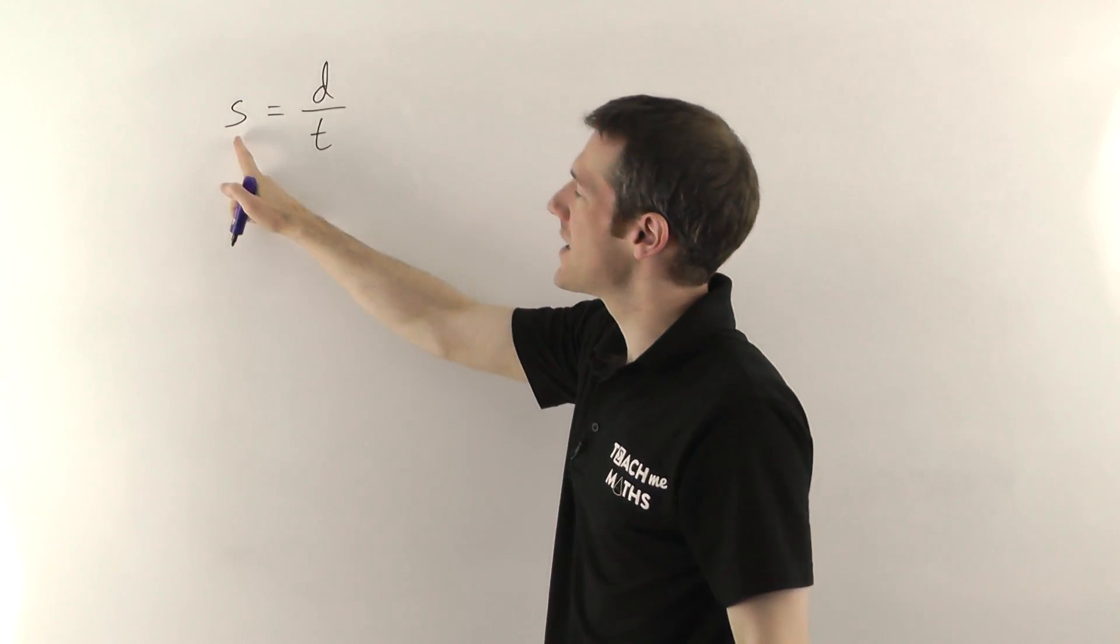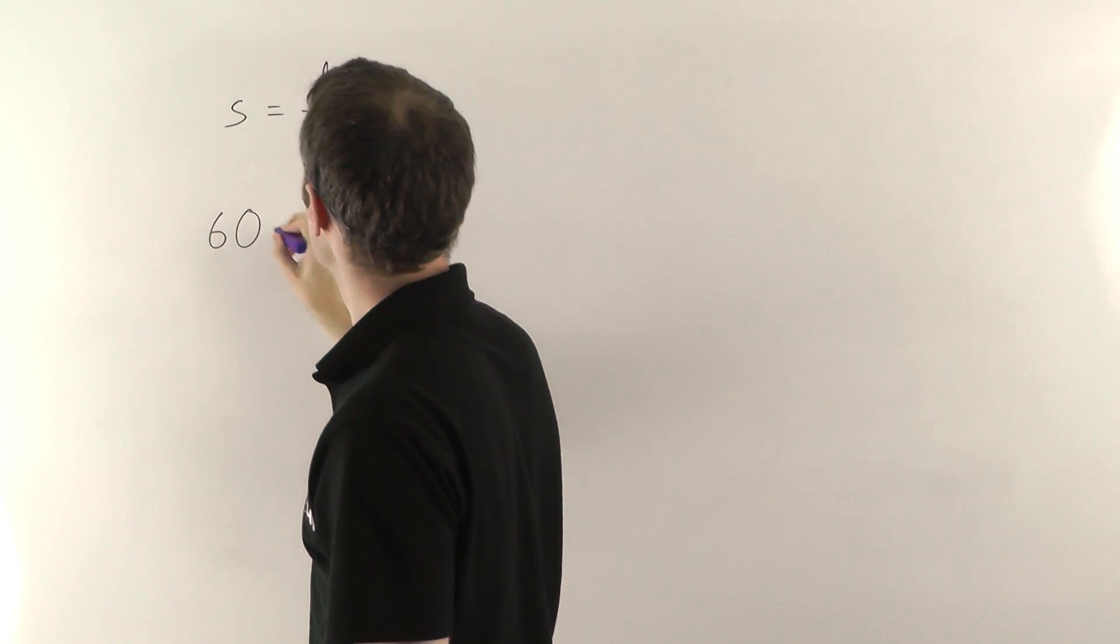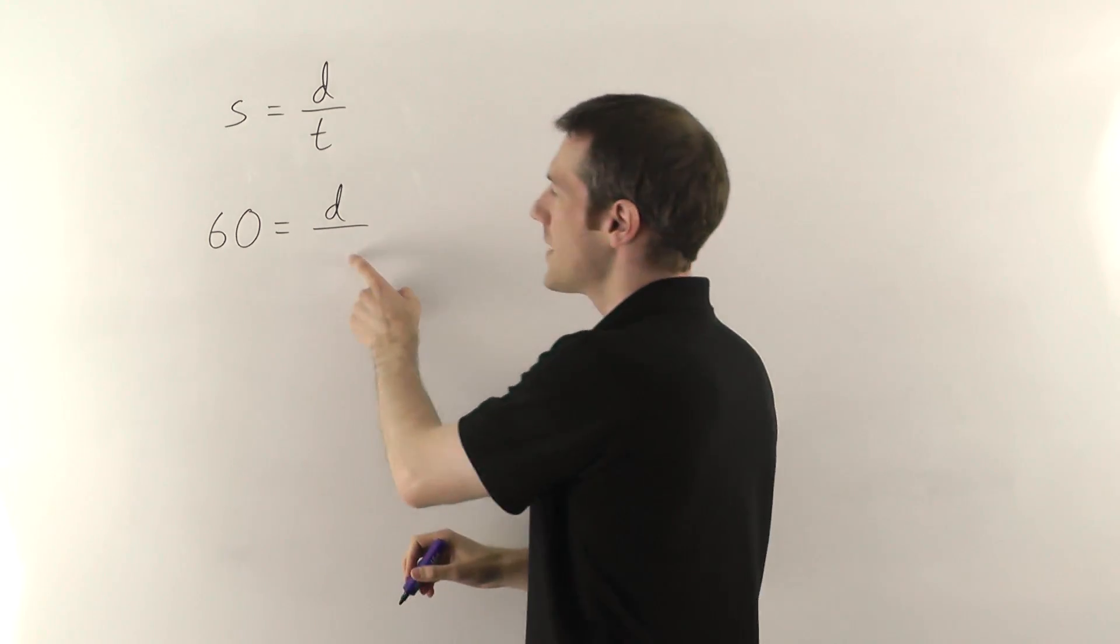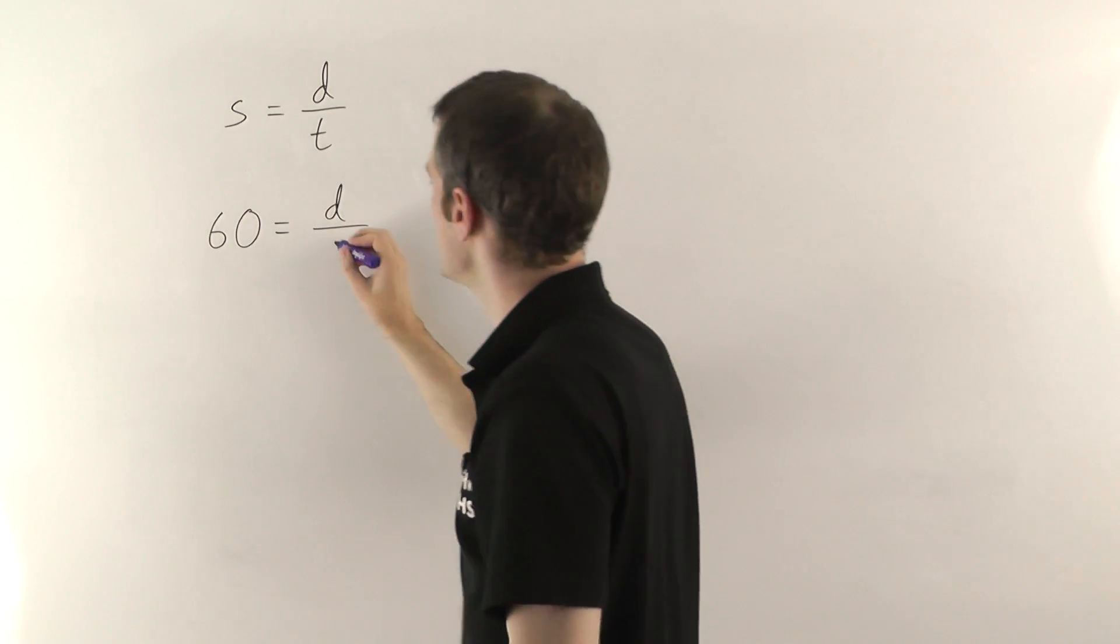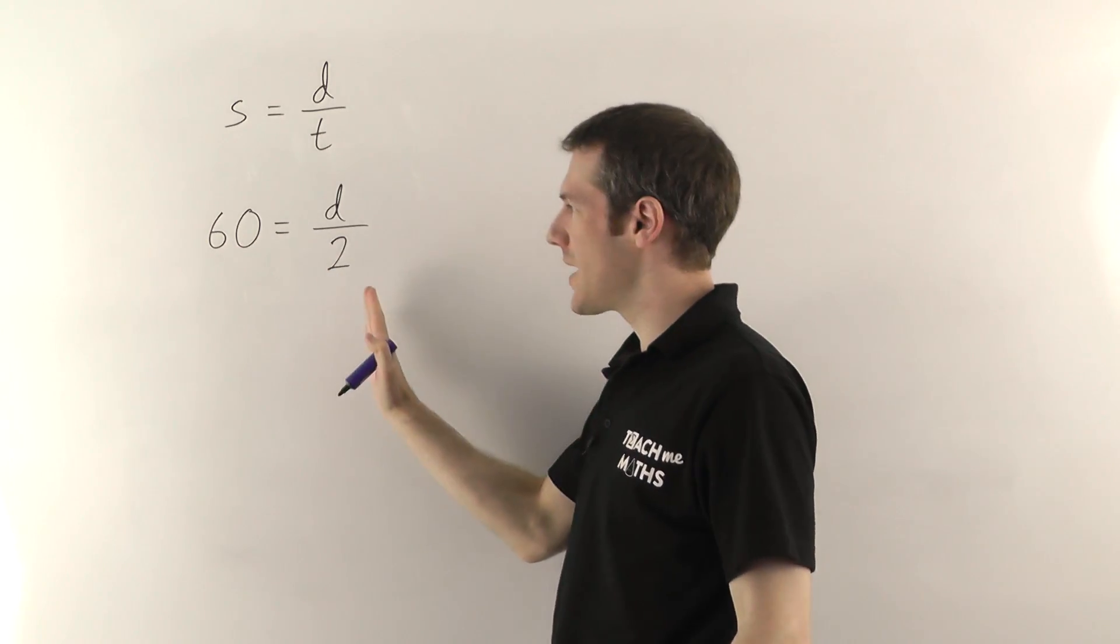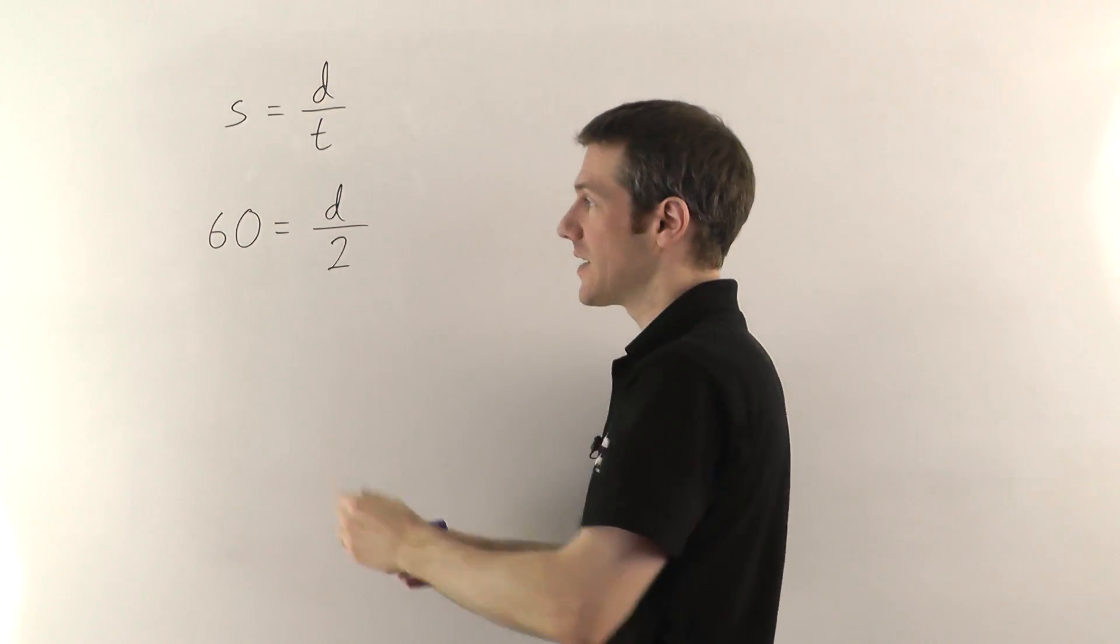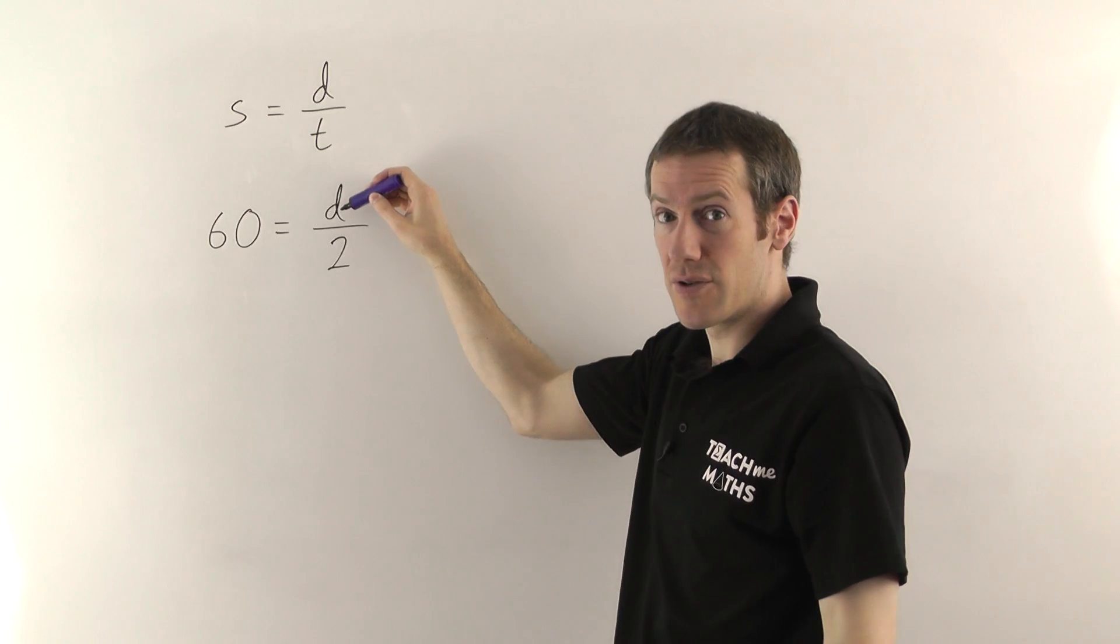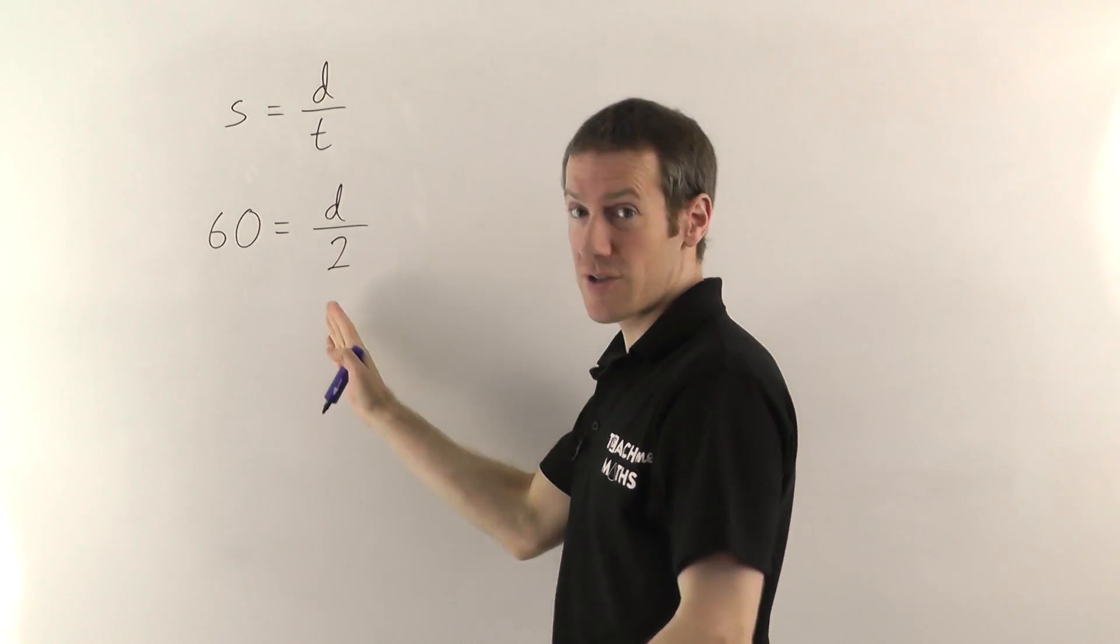Well we can do it using this equation. So as an example let's say we were traveling at 60 miles per hour, we don't know what the distance is, that's what we're trying to find out, and the time, imagine we were traveling for two hours and we want to know how far have we traveled? We've been going 60 miles an hour for two hours, how far is that?